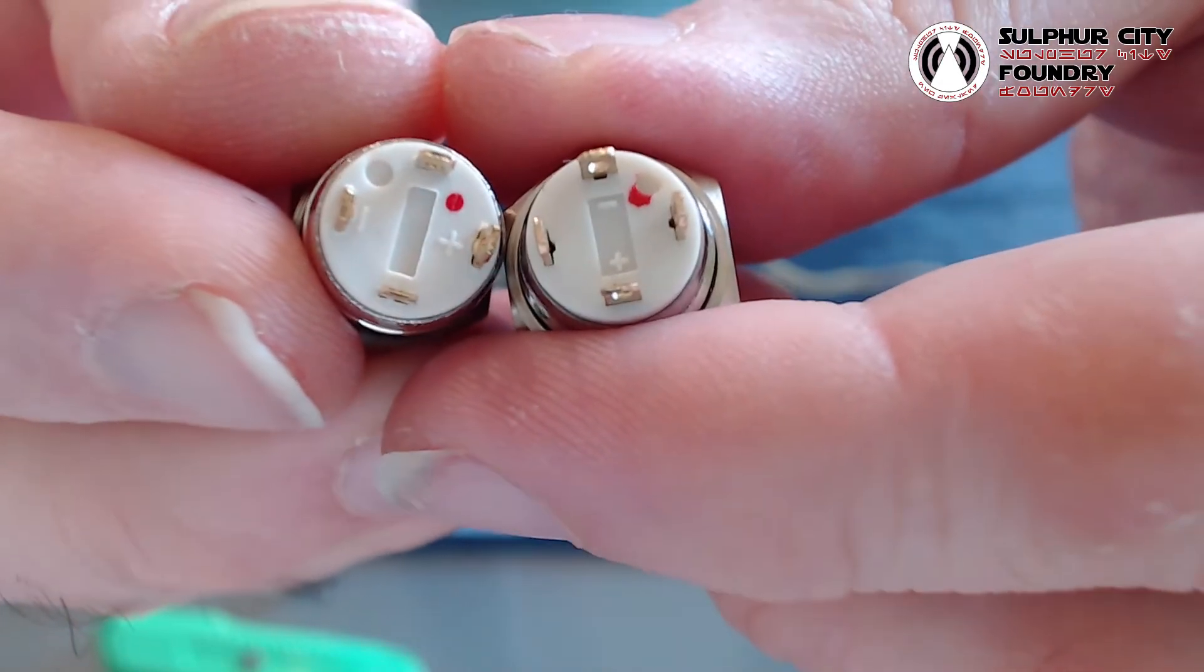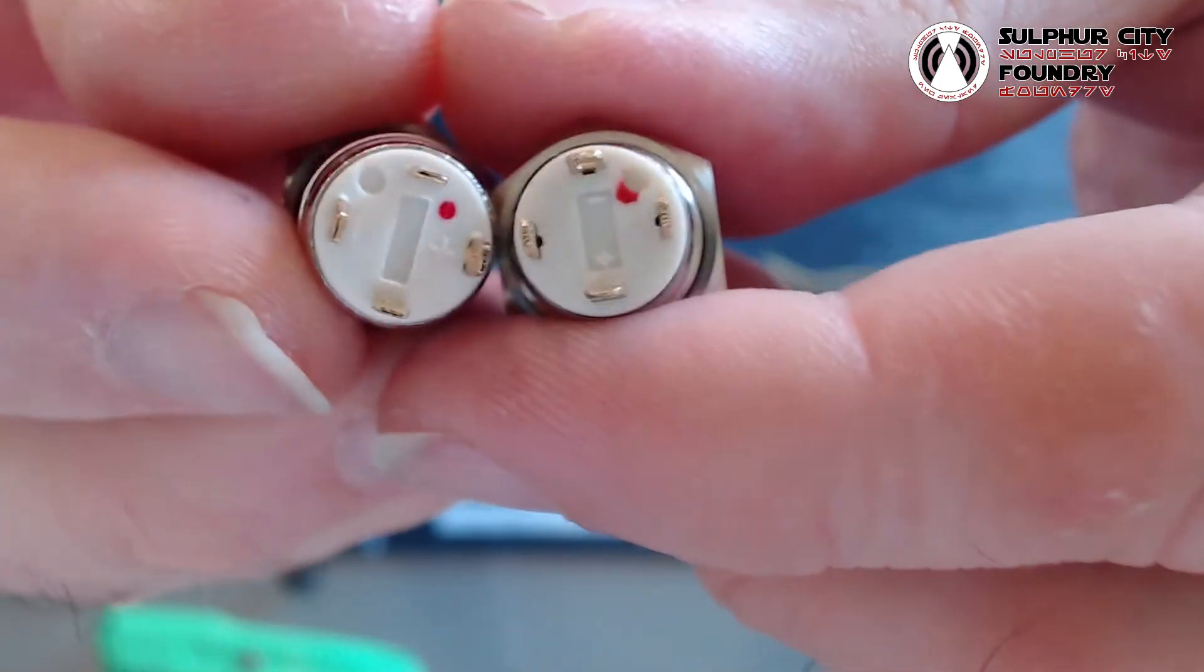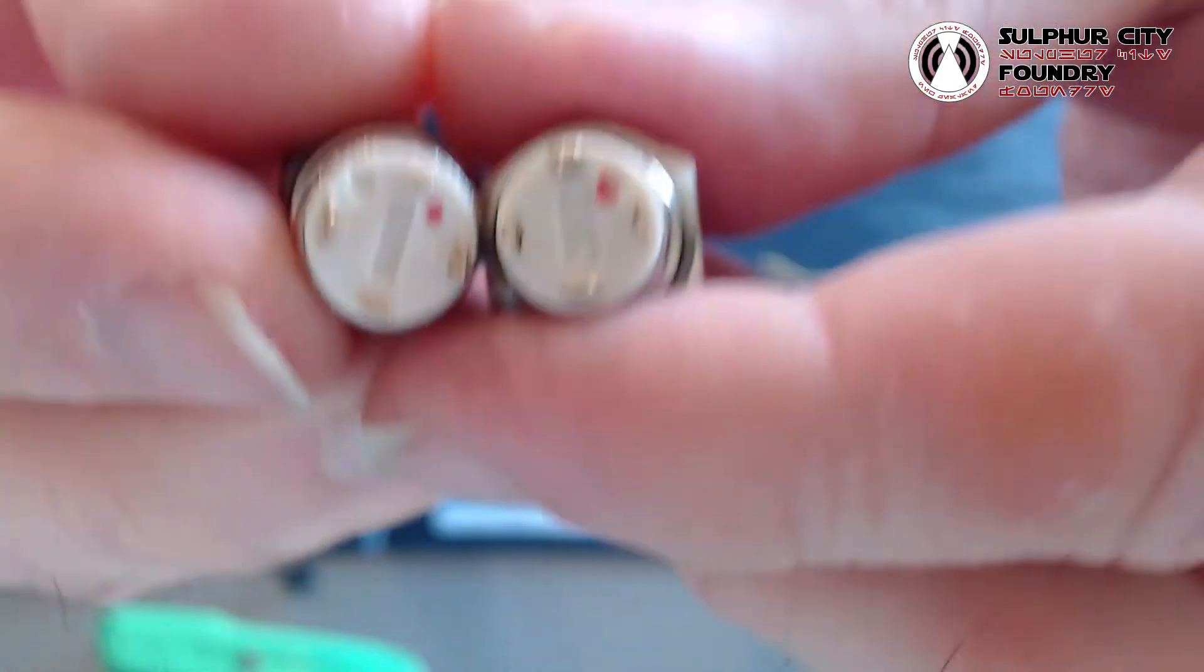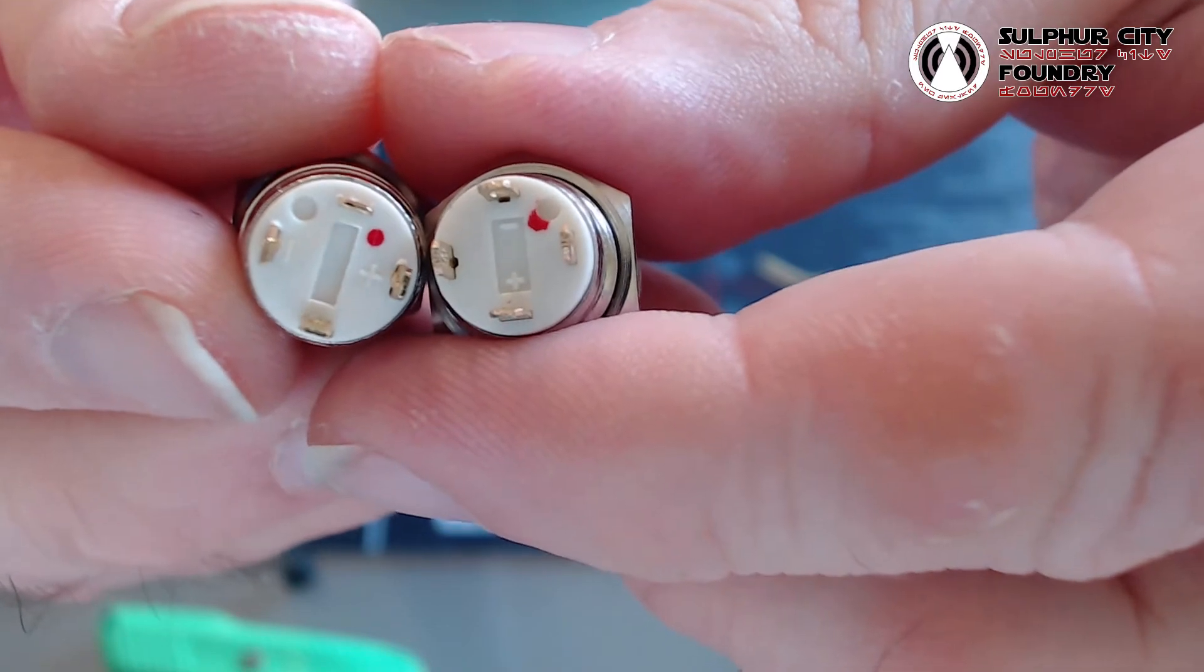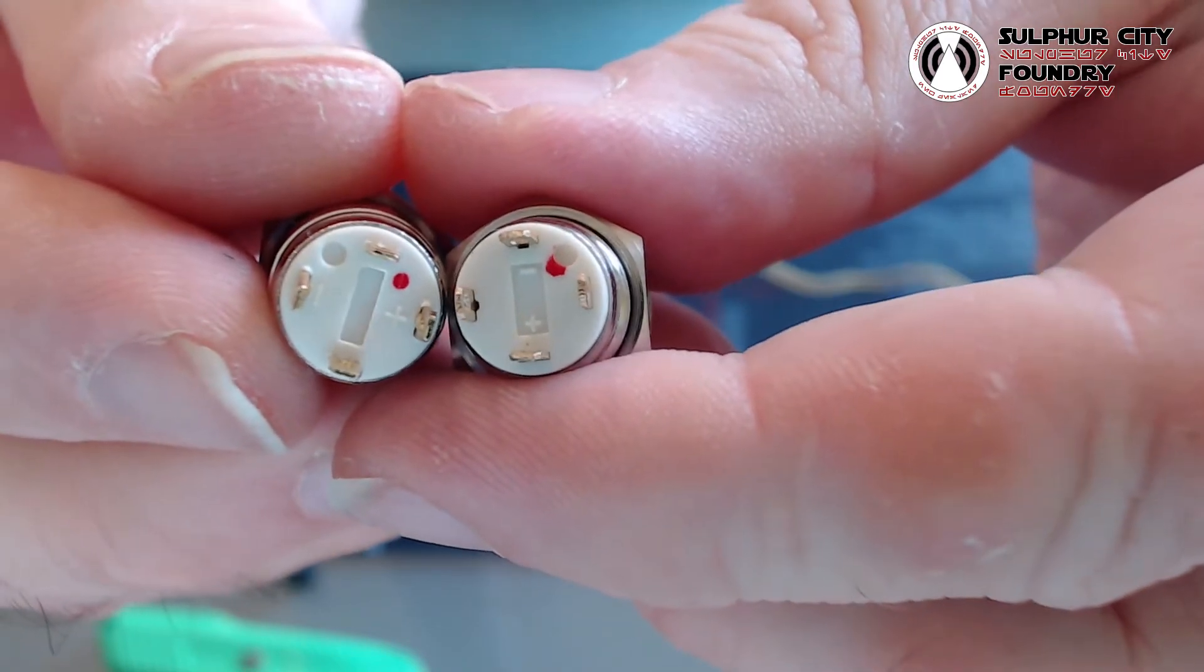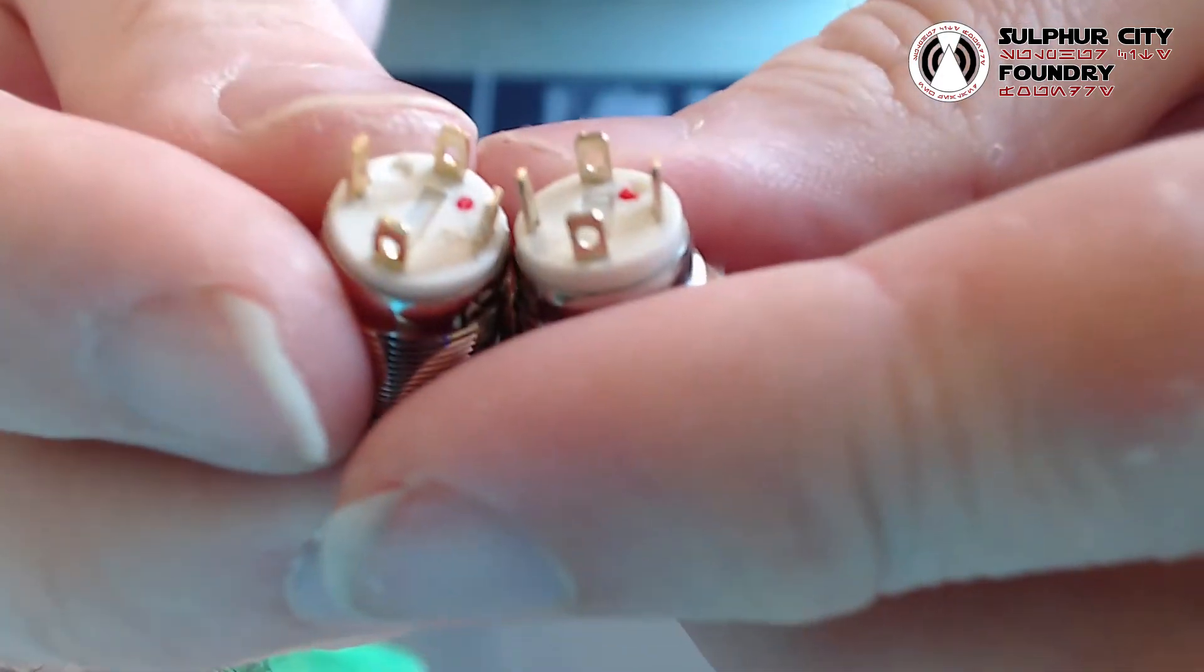This is a perfect example of demonstrating that not all LED switches are made equally. So it's always worth, these are two red switches that we sell, always worth double-checking where the positive and negative for the onboard LED actually is.